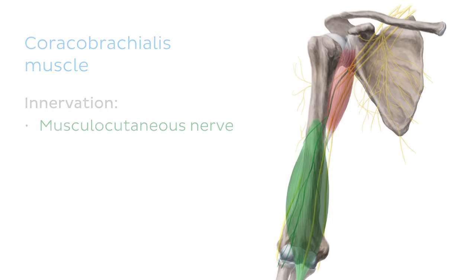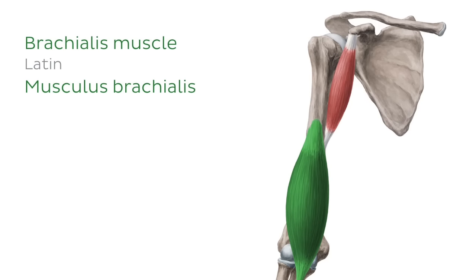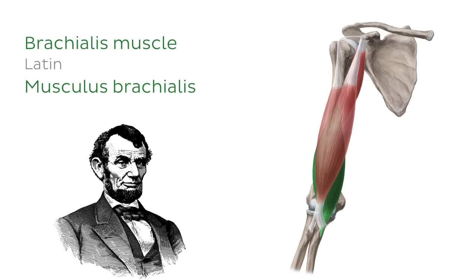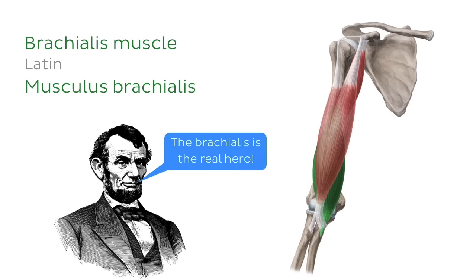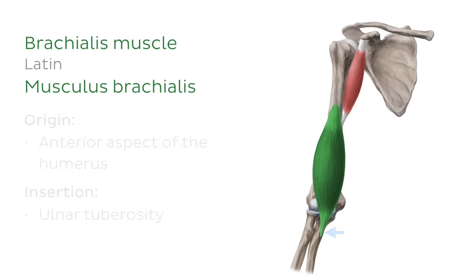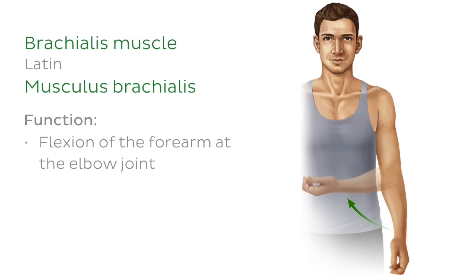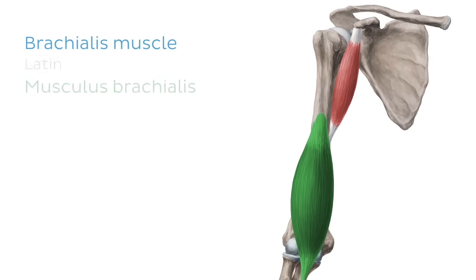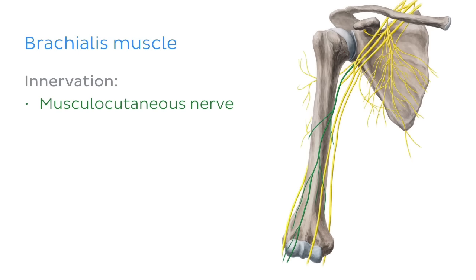The third and last muscle of the anterior compartment is the brachialis. Although the brachialis is located deep within the arm, its large belly makes the biceps brachii look much larger on the surface than it actually is — so behind every great biceps, there's a great brachialis. This muscle originates from the anterior aspect of the humerus and inserts onto the ulnar tuberosity. When it contracts, it causes flexion of the forearm at the elbow joint, particularly when the forearm is pronated. The brachialis is innervated by the musculocutaneous nerve, with the lateral part also receiving some innervation from the radial nerve.